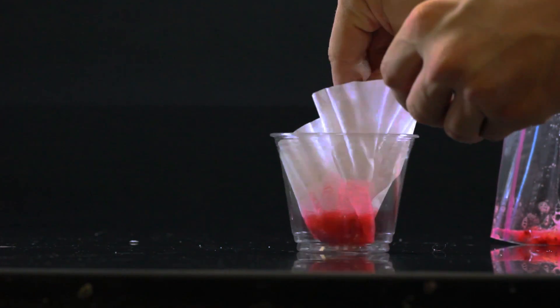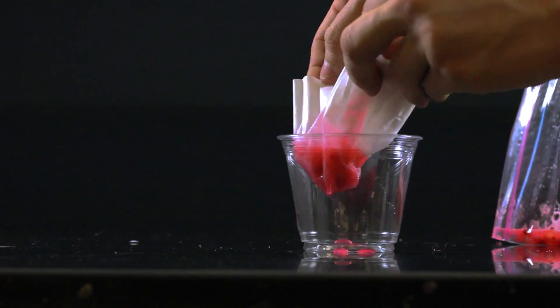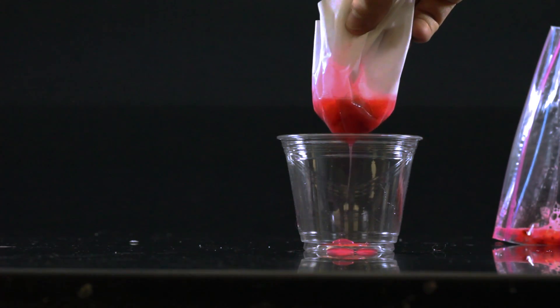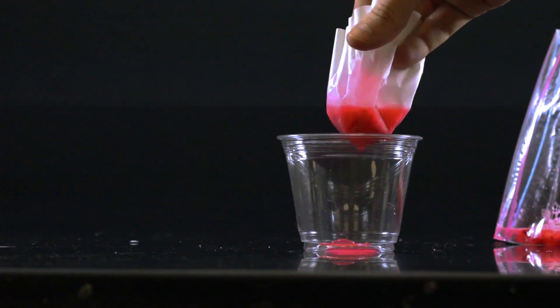The DNA is in solution and will go through the coffee filter but many of the big chunks of the cell will be left behind. At this point you have a clear red liquid which contains the DNA of the strawberry.